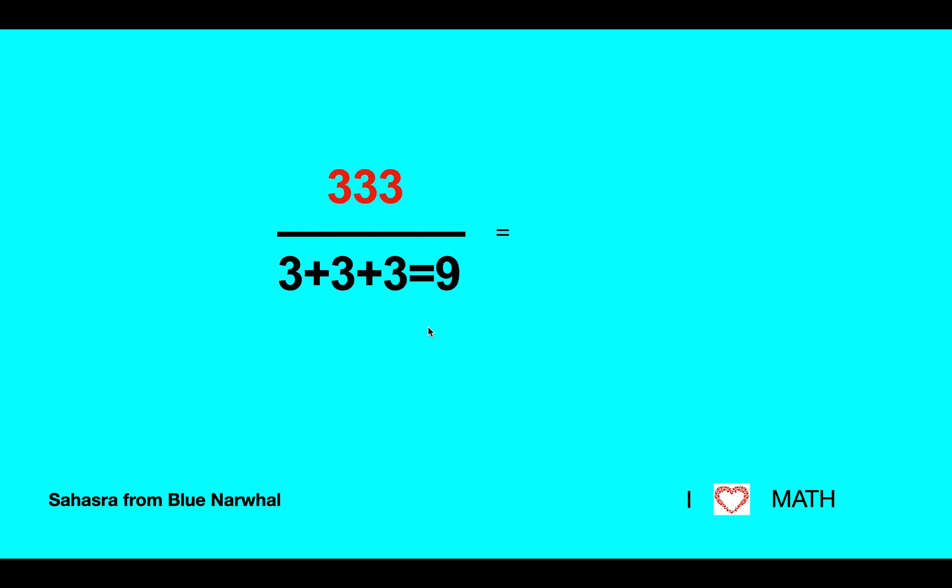Next I have 333. I did the same thing and now I get nine. See how these are adding up by three? 333 divided by nine equals 37. Looks like this one is the same too.